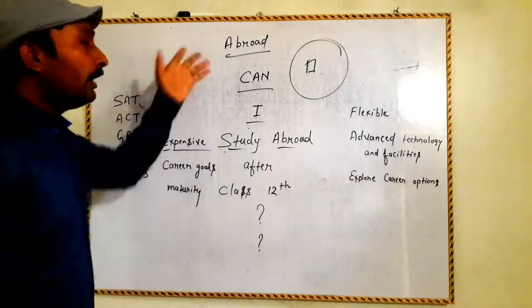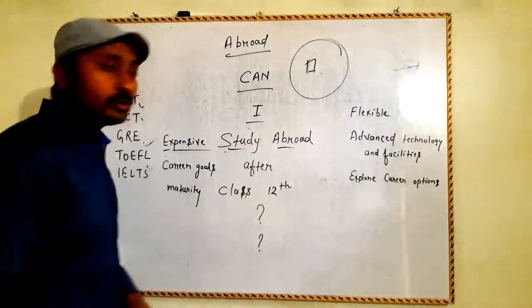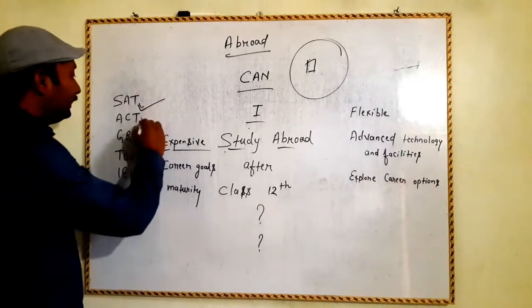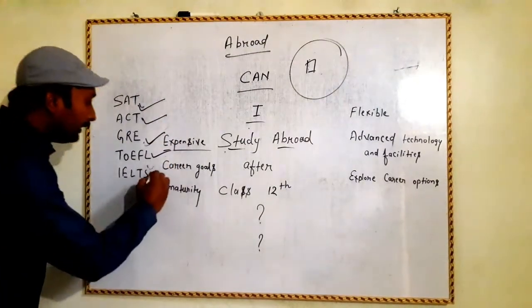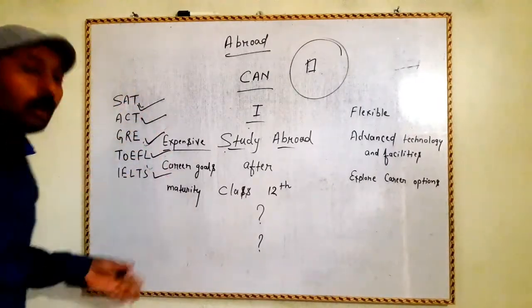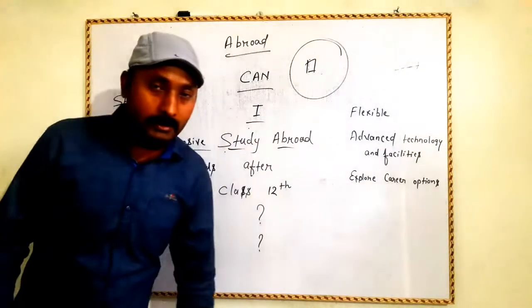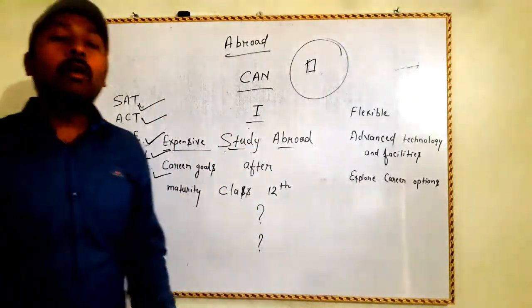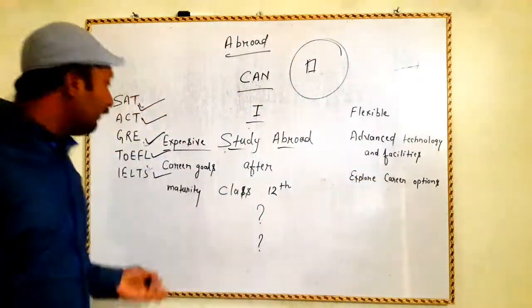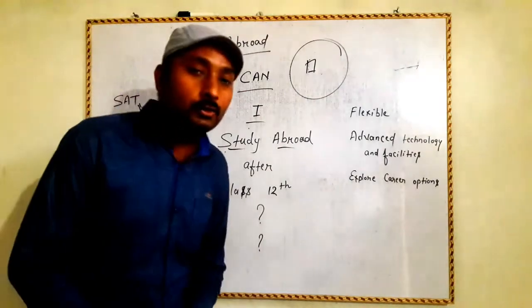For going abroad, what are the procedures? Very first of all, you have to know some terms: SAT, ACT, GRE, TOEFL, and IELTS. What are these? These are exams which are being conducted. You have to apply and give the exam. If your result is quite good, you will get a scholarship also.